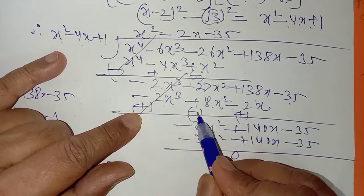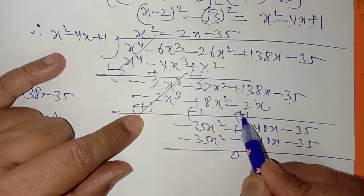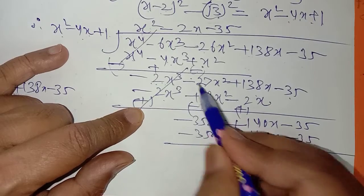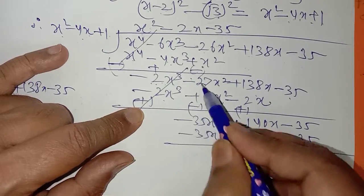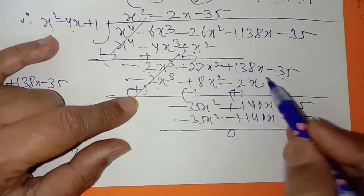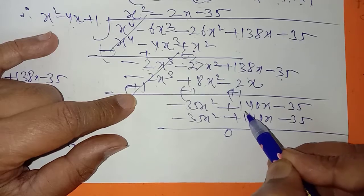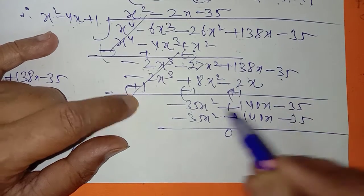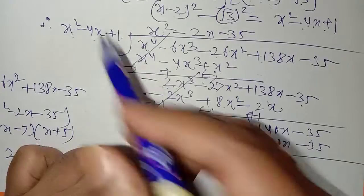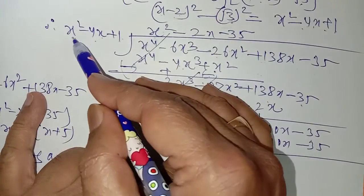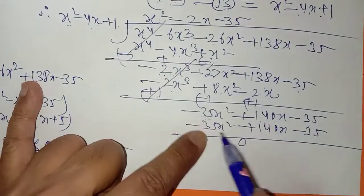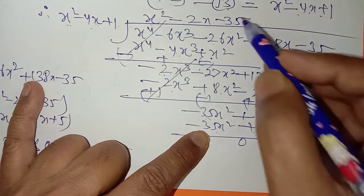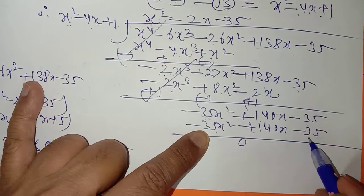plus minus plus — sign change کرتے ہیں، cancel۔ یہ plus ہے، یہ minus — same sign add ہوئے: minus کا 35 آیا، plus 140، minus 35۔ اب minus 35x square ہے، اس کو minus 35 سے multiply کریں گے: plus 140 آیا اور minus 35 آیا۔